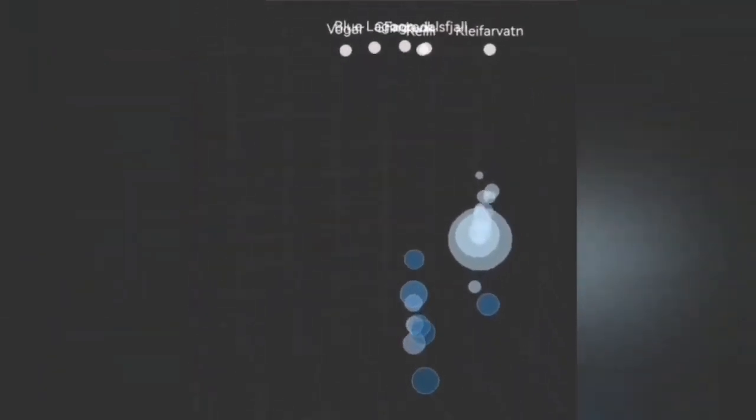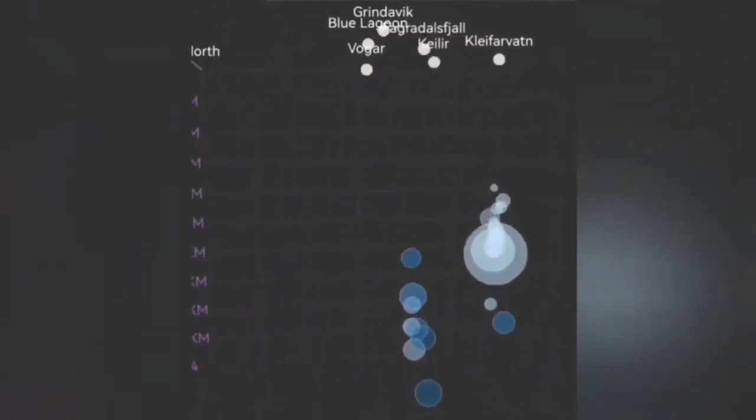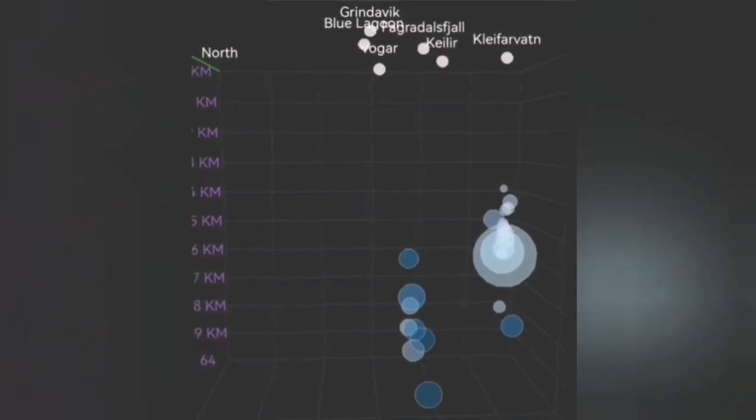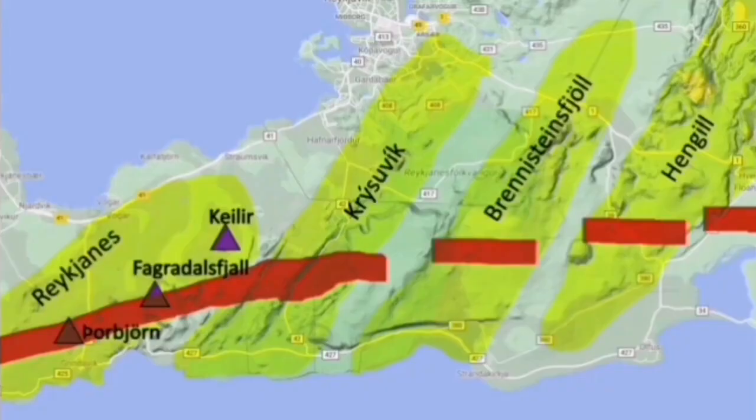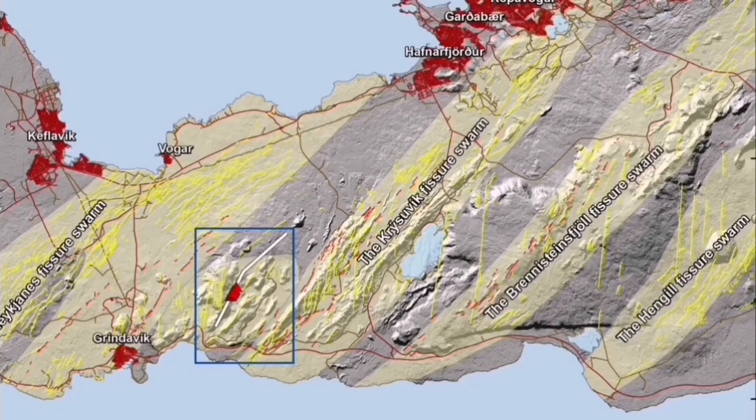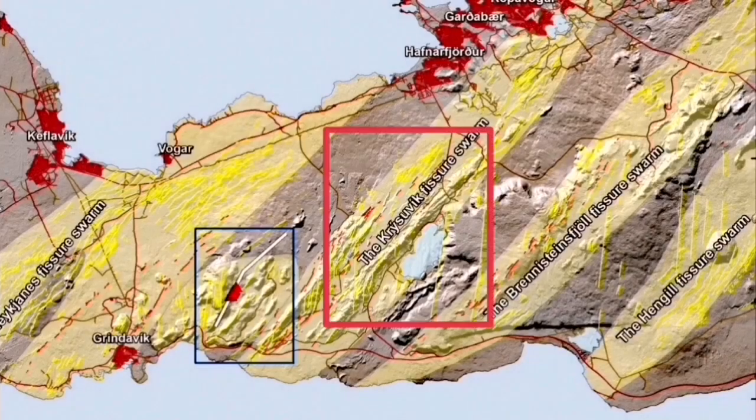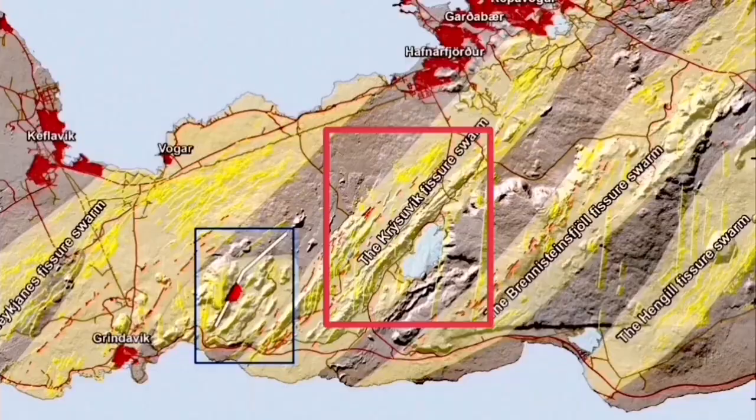In that area we don't have any earthquakes at the moment that are as big as that, although we have a swarm rising gradually in the middle, you can see that. The location of them - in this case - are related to the Krisovic volcanic system, a big volcanic system.